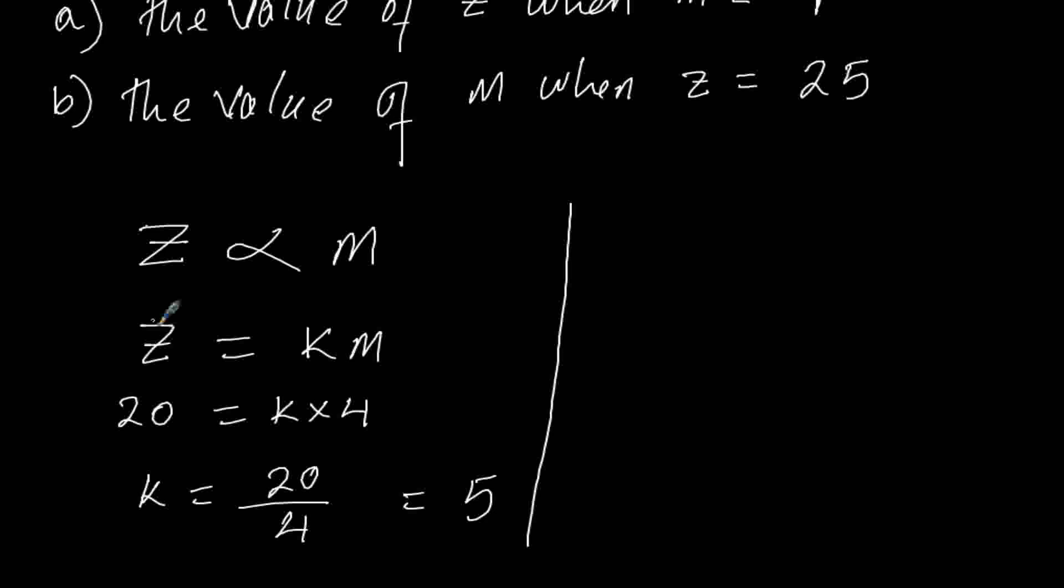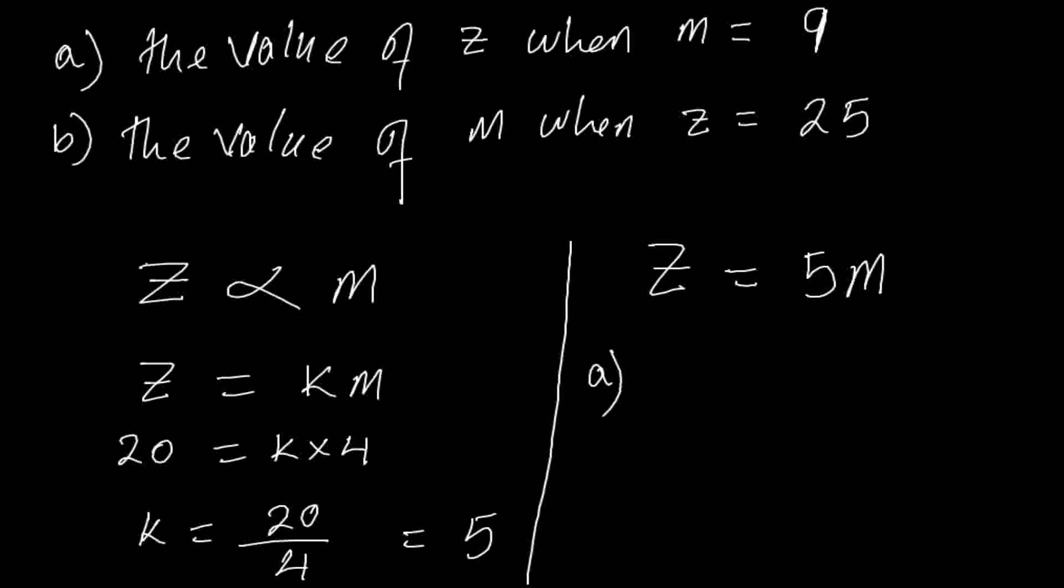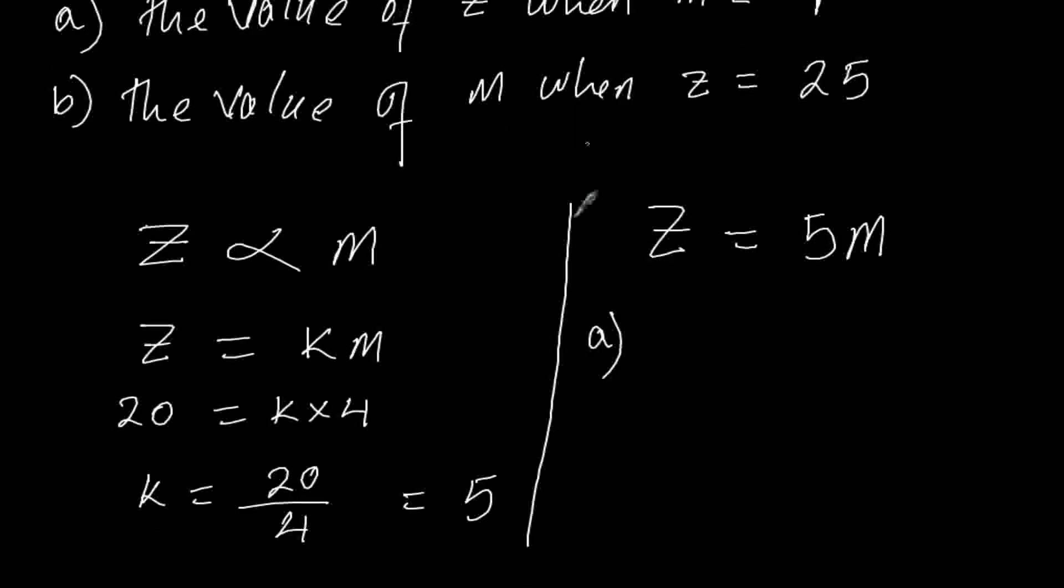Rewriting our equation, it will be Z equals 5M. So part A: find the value of Z when M equals 9.